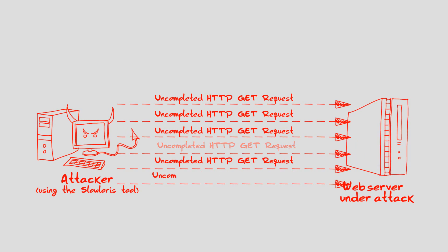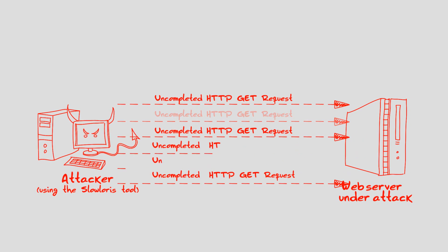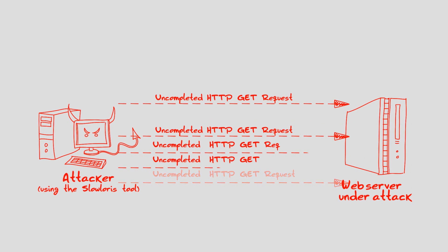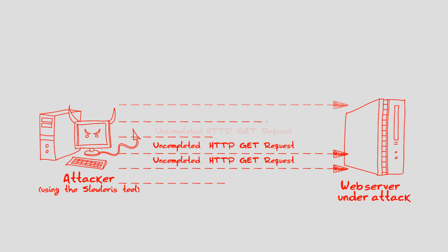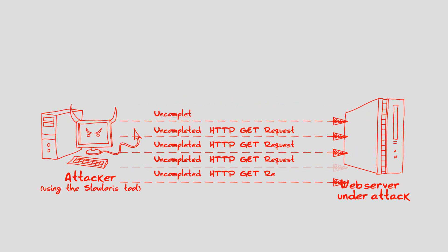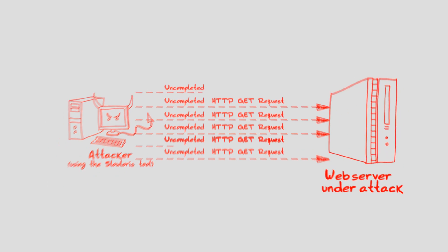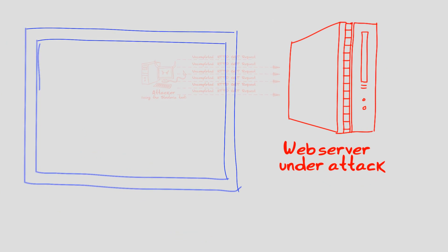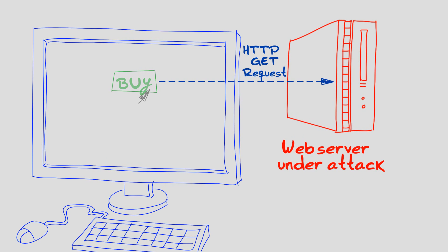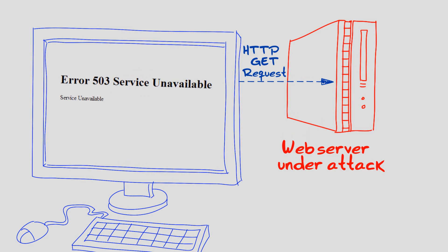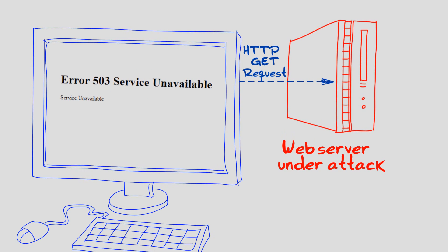Slow Loris takes advantage of this behavior and generates thousands of requests over several minutes where none of the requests are terminated. This consumes the available open connection resources of the web server, causing it to stop handling new requests and preventing the service from legitimate users, hence achieving a denial of service.